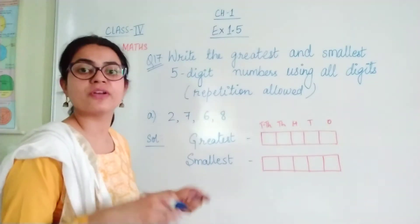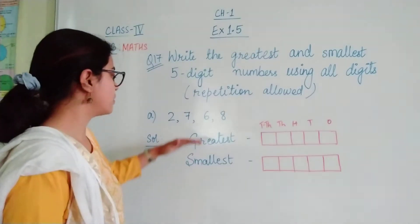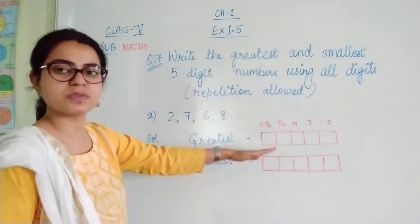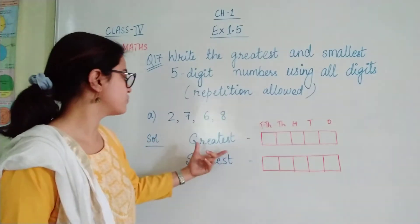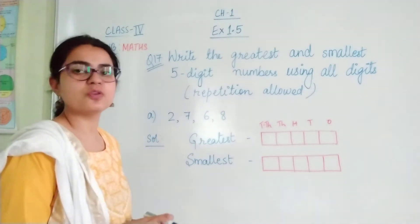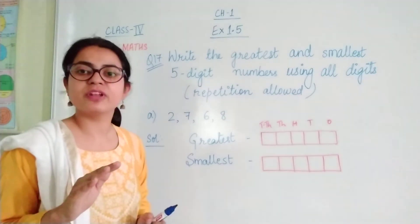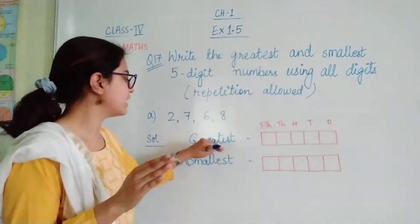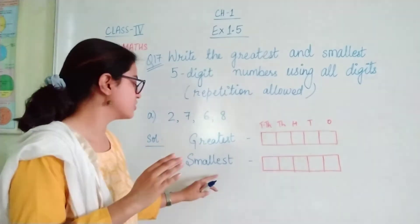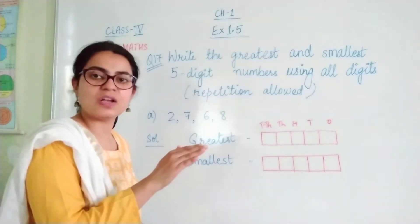Ham min mein se diye gaye digits ko repeat kar sakte hai. So again I have made the columns according to the place values with greatest and smallest. So the first rule will be the same. That means for greatest, arrange in descending order and for the smallest, arrange in ascending order.